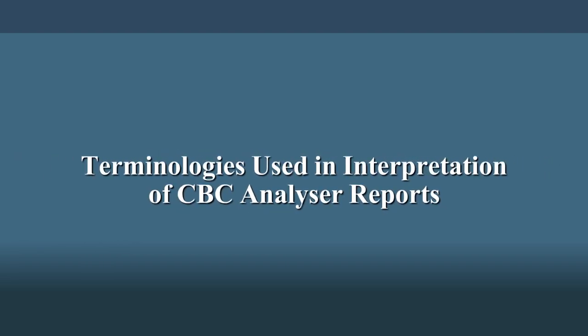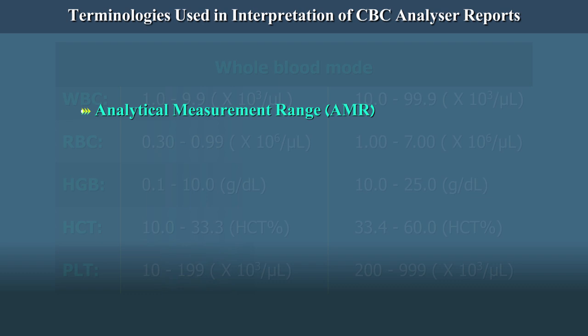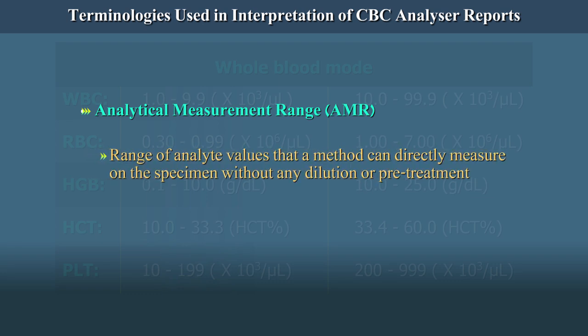Terminologies Used in the Interpretation of CBC Analyzer Reports. First, let us discuss some terms used in ISO with regard to ranges. Analytical Measurement Range, i.e. AMR. The AMR is the range of analyte values that a method can directly measure on the specimen without any dilution or pretreatment.